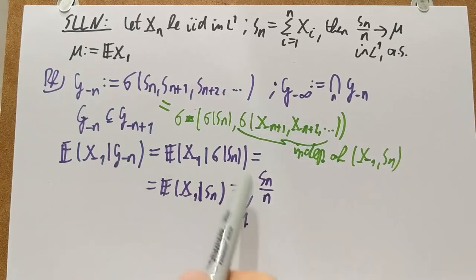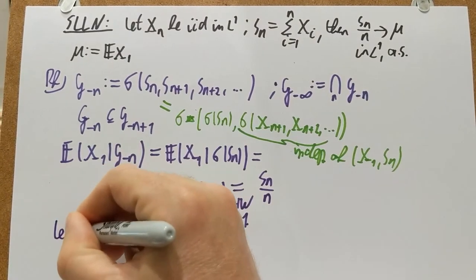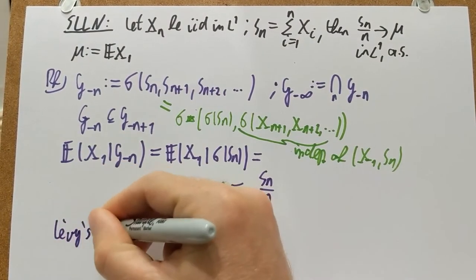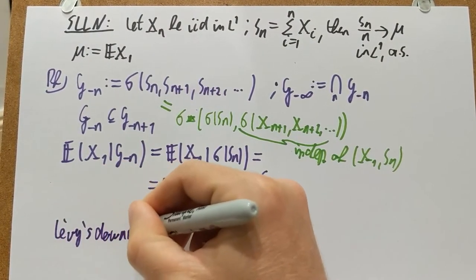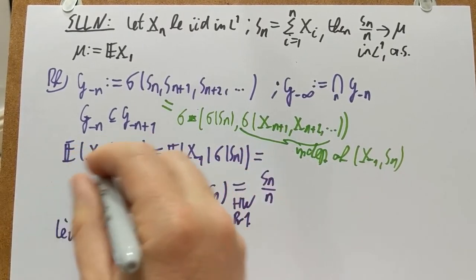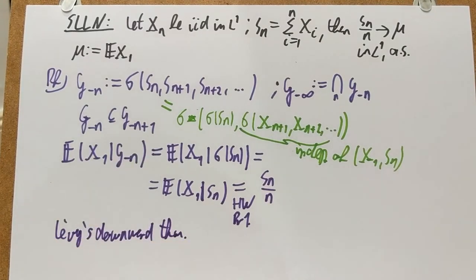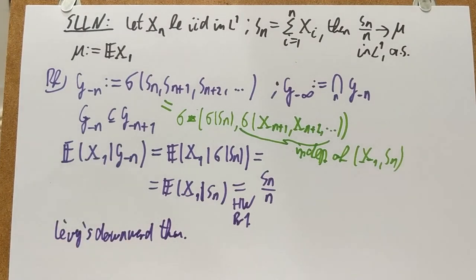So now this is very nice. And now we look at Levy's downward theorem. Levy's downward theorem. Which exactly said that this kind of objects are martingales. And that they converge to somewhere, to an M_∞, almost surely and in L1.